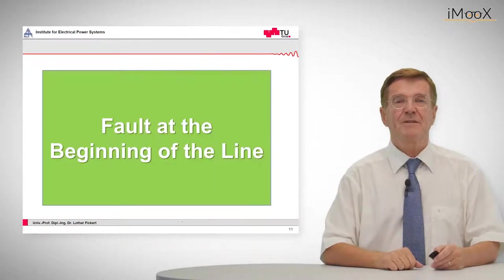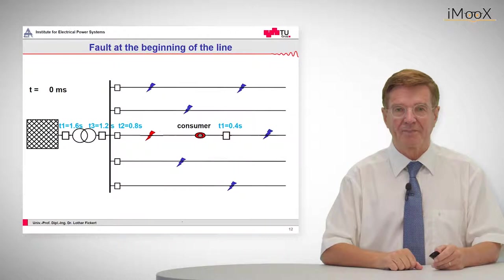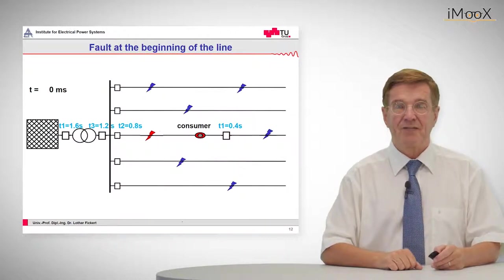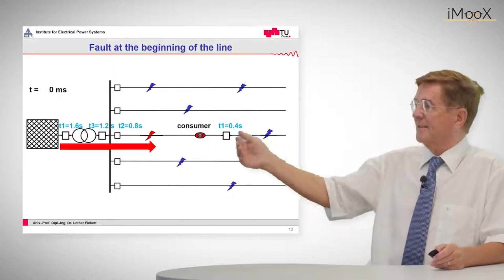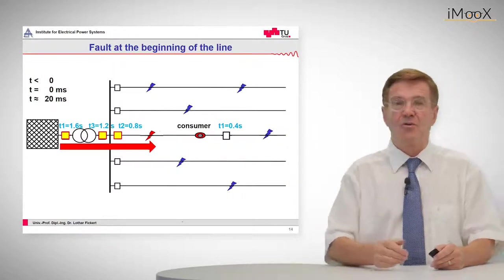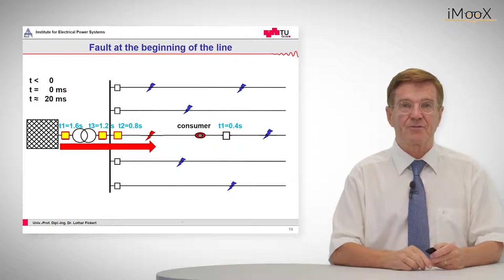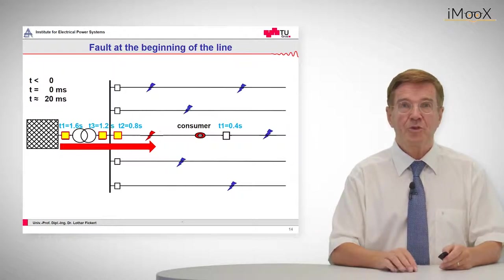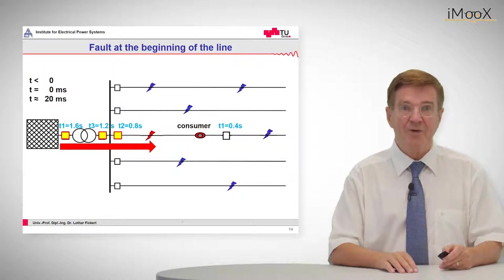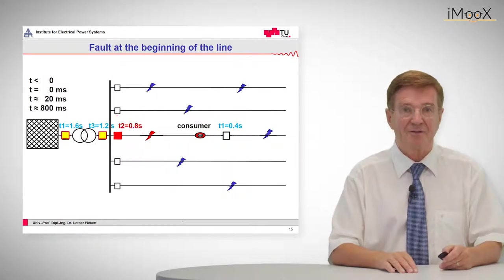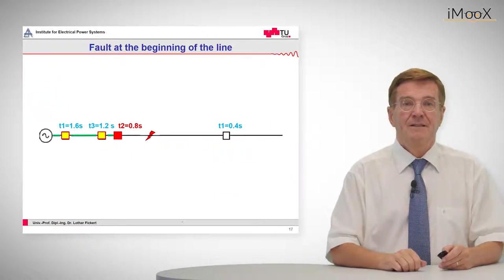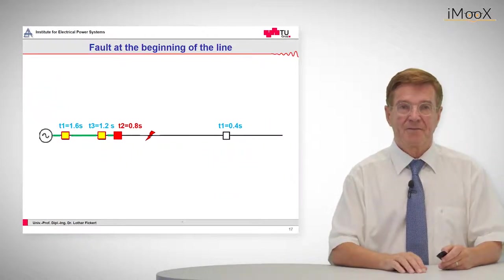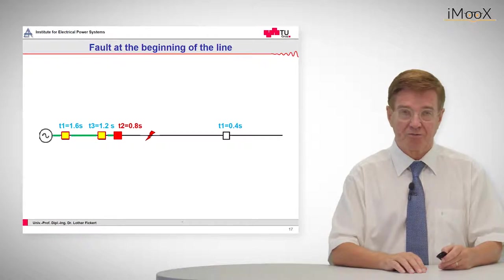So, what happens for a fault at the beginning of the line? The methodology is exactly the same. We have the feeder with the fault location. The fault sets in, the current causes all the protection relays upstream to pick up and that one with the lowest tripping time will actually trip out, indicated in red. So here we have this picture, which may be displayed in a control room.